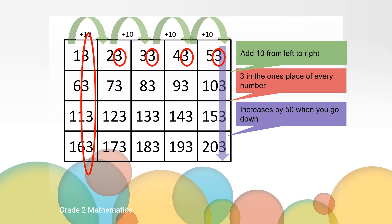53 and 50 more equals 103. 103 plus 50 equals 153. 153 plus 50 equals 203. You also might have noticed every other number in the column has the same tens and ones digit — it is just 100 more. For example, if we look at 73 and 173, they both have seven tens and three ones. The only thing that changed was 173 has 100 more than 73.